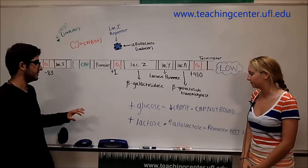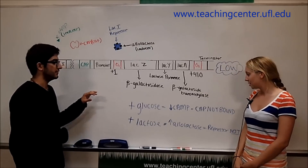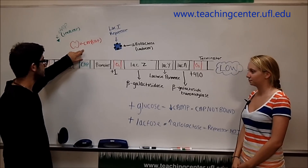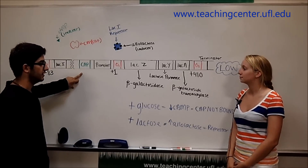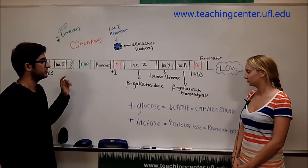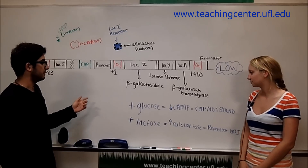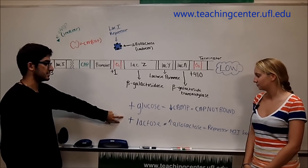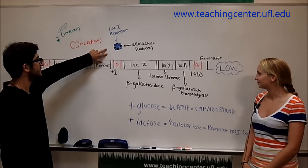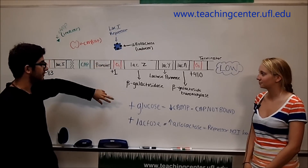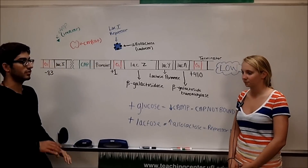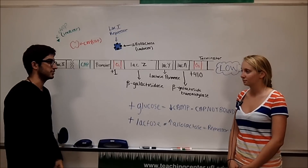In summary: we have glucose present, which means we have a low amount of cyclic AMP, so the CAP protein does not bind to its binding site, meaning there is a lower amount of transcription. But we also have lactose present, which means there are high levels of allolactose, meaning the repressor does not bind. So there is still some transcription that occurs, which is why we have a little bit more than basal, but not as much as the third condition.